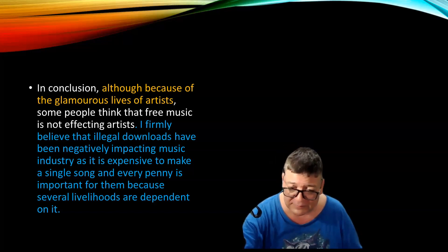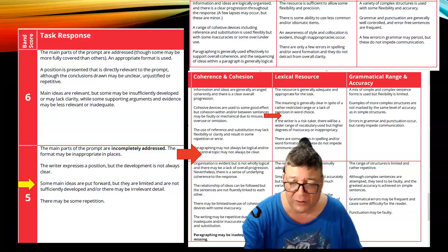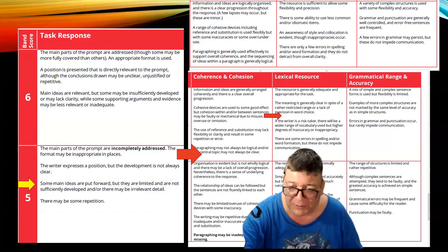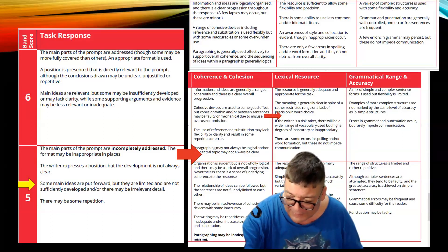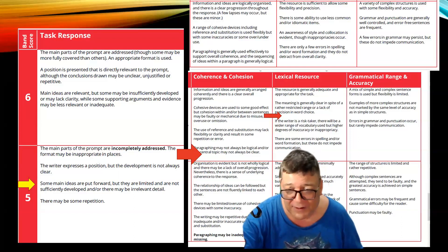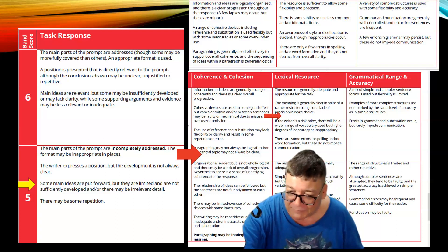It's my first chance to have a look at the new band descriptors in a response here. In terms of task response, there are some main ideas put forward, but they are limited and not sufficiently developed — or there may be irrelevant detail, like Taylor Swift and a hundred million dollars. There's repetition throughout. So I'm afraid it's going to be a band 5 in task response. The other areas are all in the six range, so nothing more than a six overall — which is not what people want to hear. See you next time.